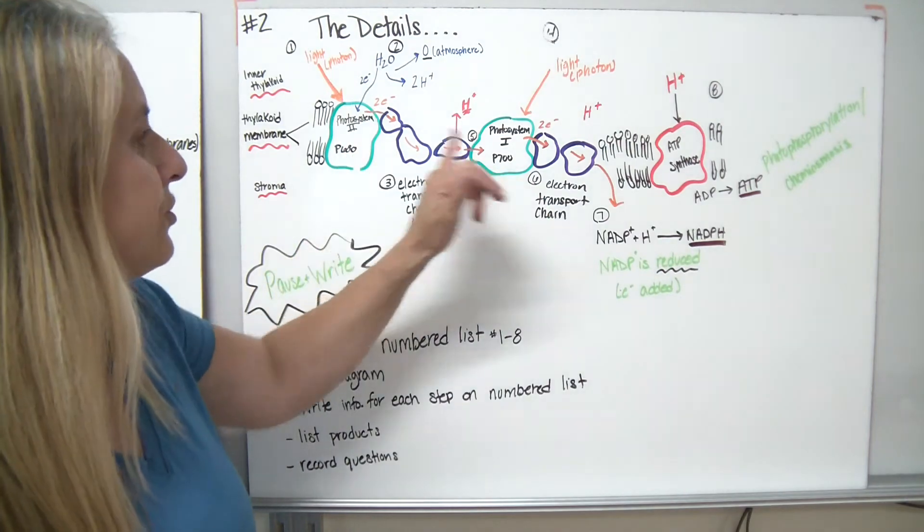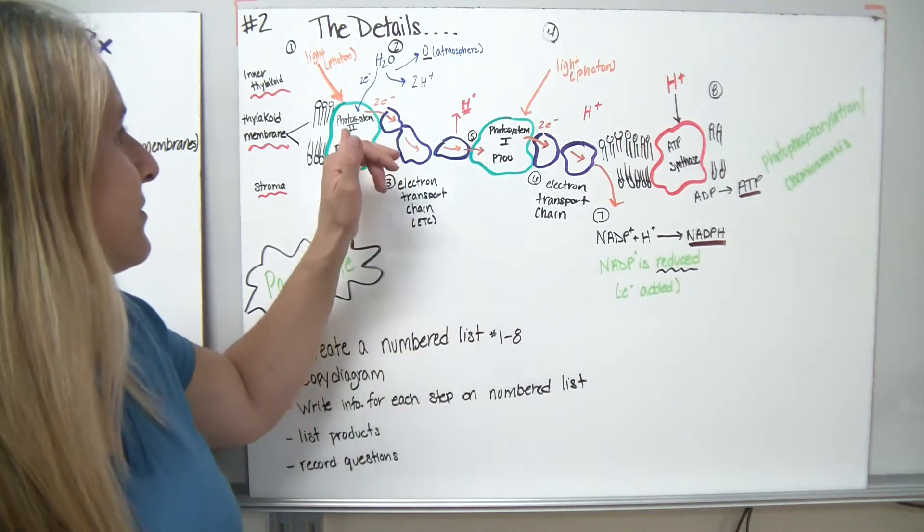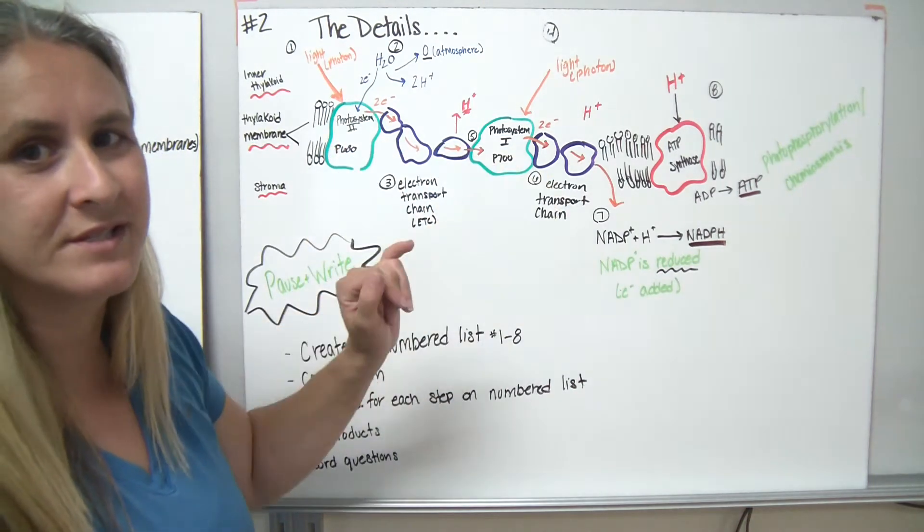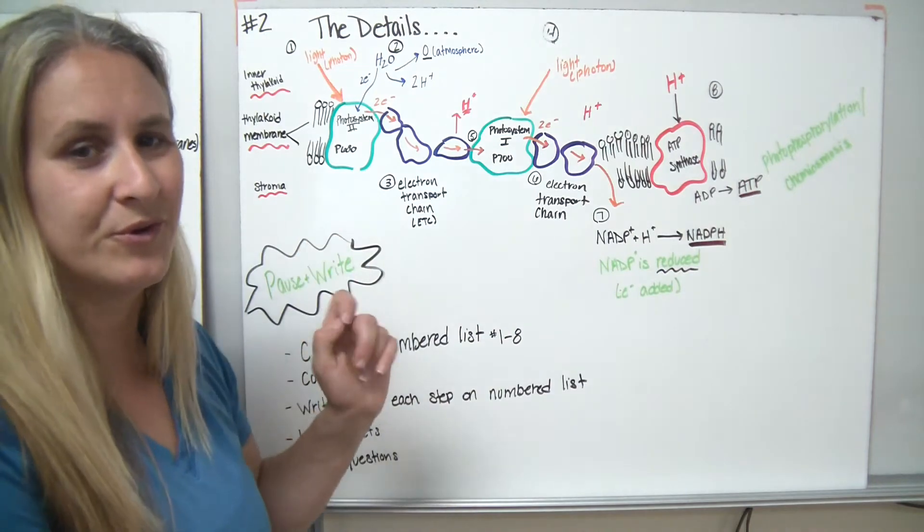There are two main photosystems in our chemical reaction for photosynthesis. They're labeled photosystem two and photosystem one. Now, it is a little confusing because we start off with photosystem two.